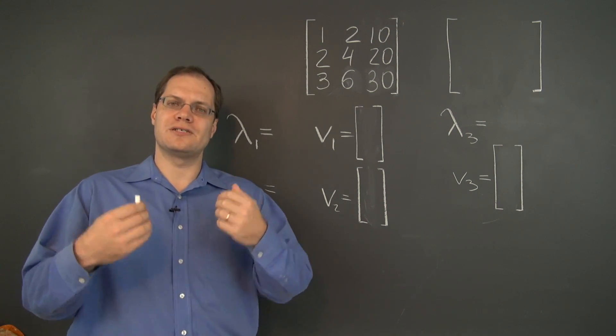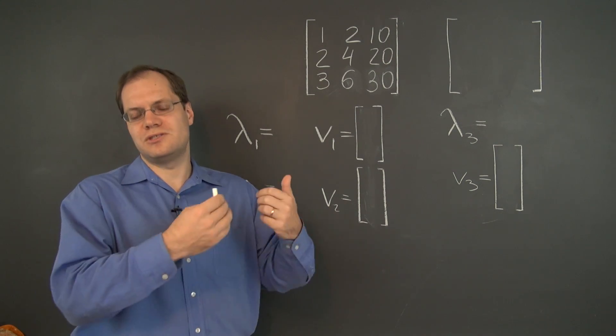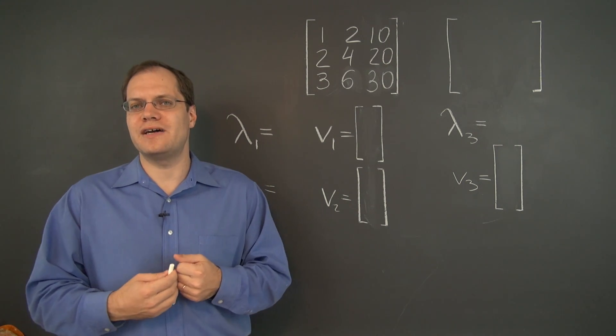Well, that's because A times any one of those vectors equals zero, which is zero times the input vector.